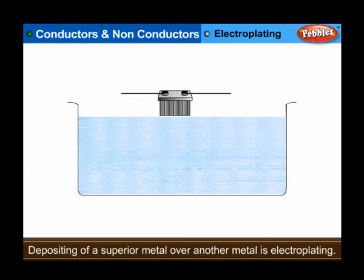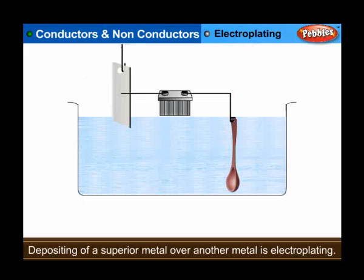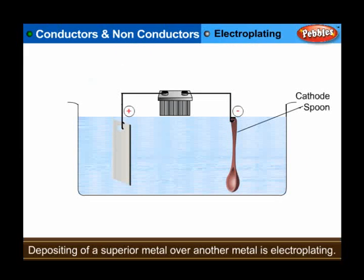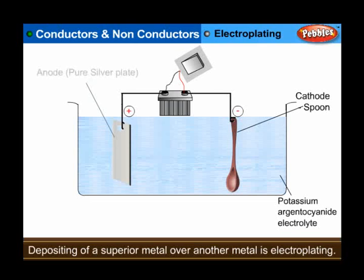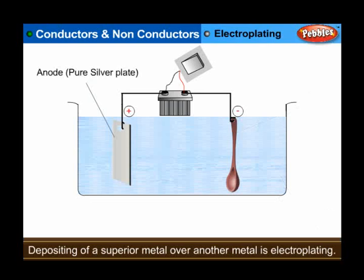For example, in the silvering of a copper spoon, the anode is made of silver and the spoon functions as the cathode. The electrolytic bath is a solution of potassium argento cyanide. Under the influence of current, silver from the electrolyte gets deposited on the article (spoon), and an equal amount of silver metal dissolves from the anode into the bath.